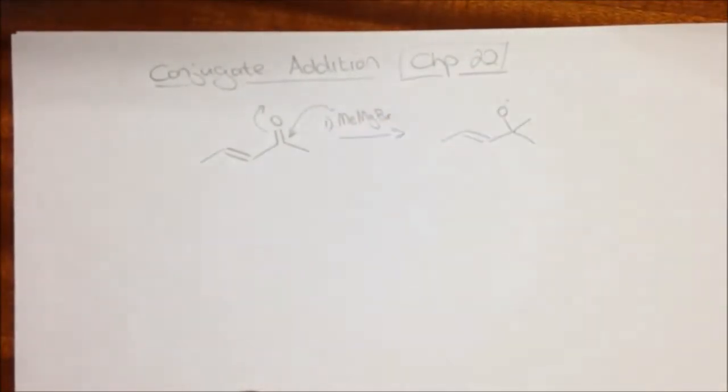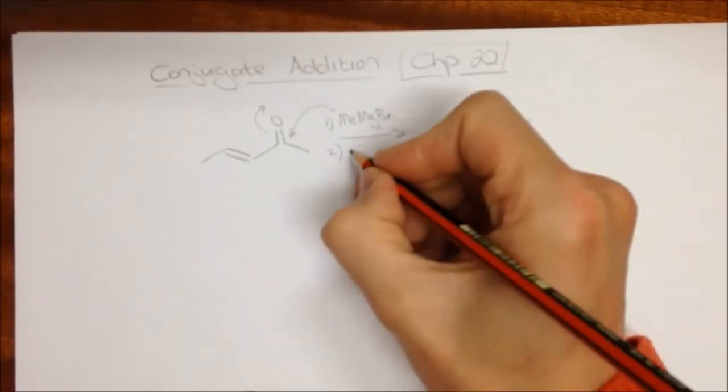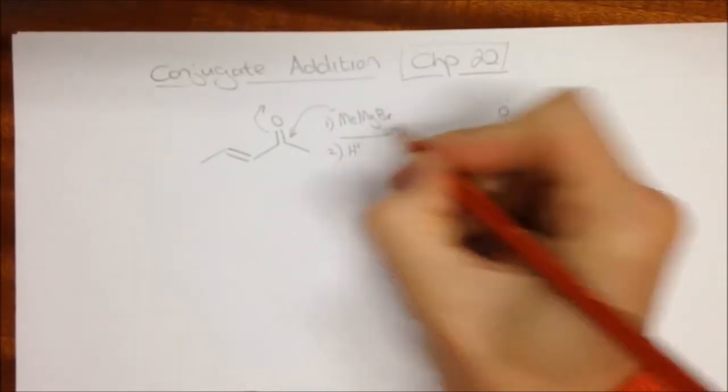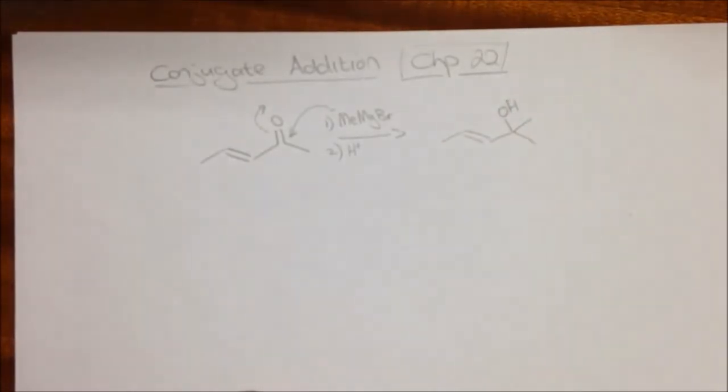So normally the first step will be doing this, and the second step will have some sort of proton source coming from an acid or from water, and that would protonate this, giving us the OH. So that's the Grignard reaction, which you should know from first year.